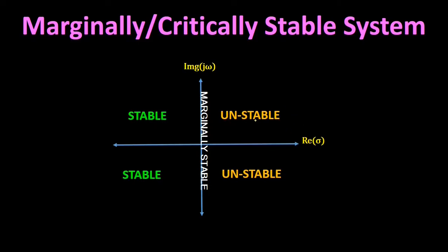When poles of the transfer function lie in the right half of the s-plane, the system is called unstable. When poles lie in the left half of the s-plane, the system is called stable. When poles lie on the imaginary axis, the system is called marginally stable. Since marginally stable systems come between unstable and stable systems, this type of stability is also called neutral stability.